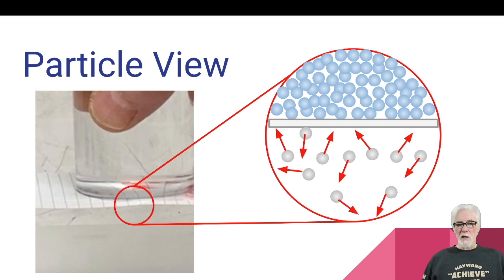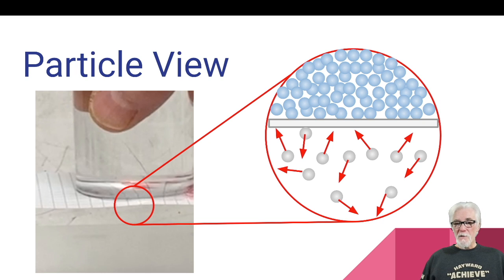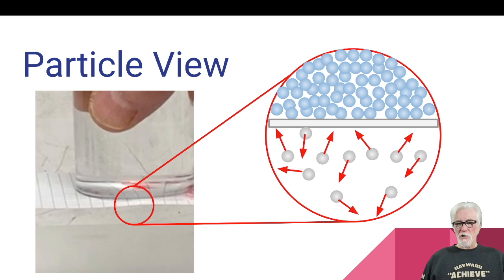If we think about the particle view at the interface where the card is blocking the opening: above the card we have dense, compact water particles. Underneath, we have air particles flying around randomly, and some of them are hitting the bottom of the card. Apparently there are enough of them that their added-up force from all those collisions is sufficient to keep the water in place. The only way to get the water to come out is to allow some air particles to get in on the other side and begin to push down just like their partners on the outside are pushing up.